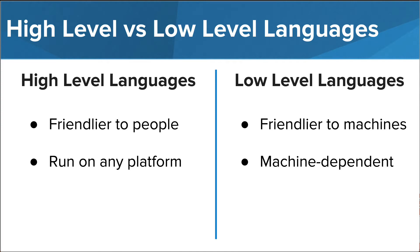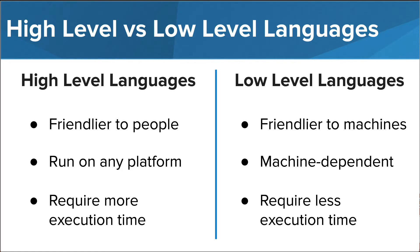High-level languages can be run on any platform and are portable. The programs can be written and run without any knowledge of the hardware of the device running them. While in low-level languages, they are very dependent on the specific machine that is running the program. High-level languages need more time to execute commands because each part of the code must be translated before a computer can receive instructions in a way it understands. In low-level languages, less execution time is required because the program is written in a way that is much closer to the language the computer will be able to read.